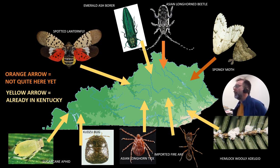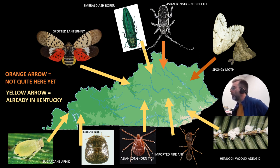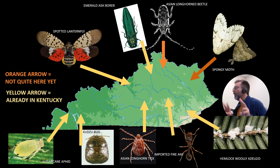The thing that has changed is that the spotted lanternfly was not in Kentucky prior to 2023, but now it is here. It was found in the northern Kentucky area in the summer of 2023, so its arrow is now yellow. If I mention elsewhere in this lesson that spotted lanternfly is not here yet, that's just left over from the old version of the video — we'll try to remove those things in future versions.